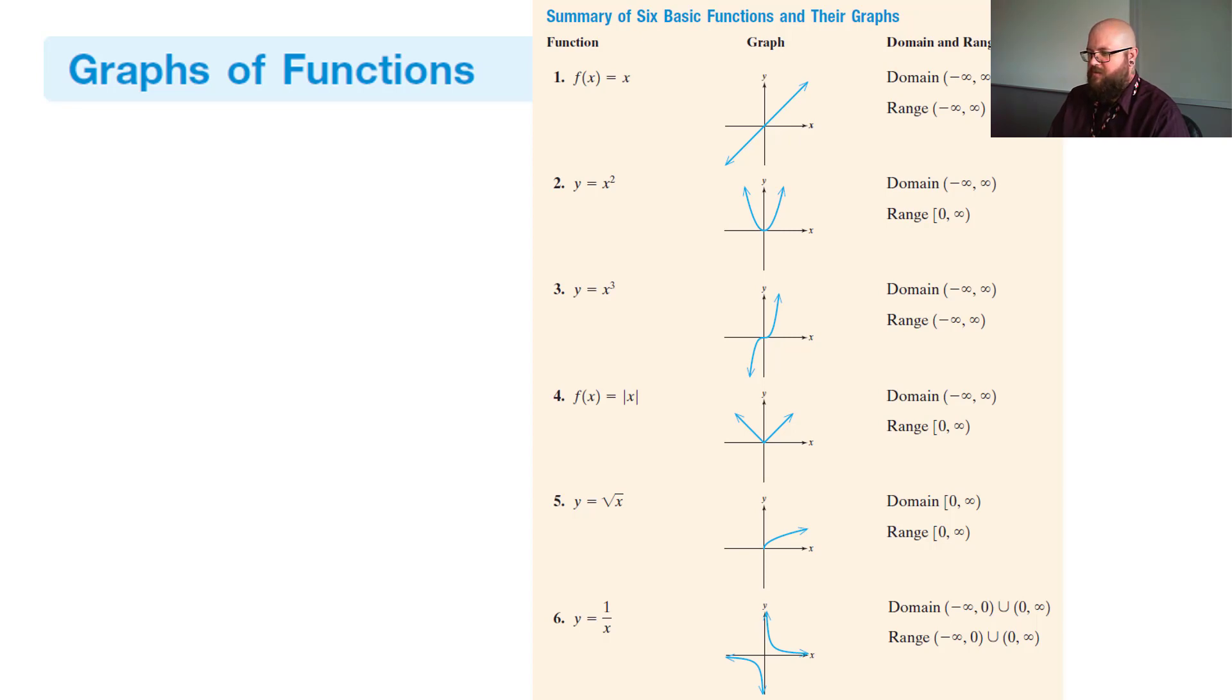Absolute value of x for this is going to open up a v shape. So root of x is going to be your point starting at (0,0). And then going off in a direction, positive direction for this one, for the square root of x. And then you have 1/x, which we have already seen. So we got two asymptotes that are going on that bad boy.